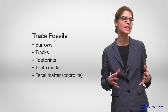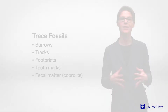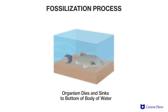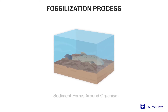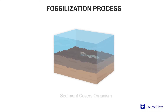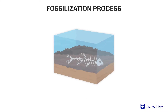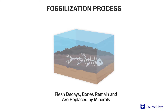The fossilization process is as follows. First, the organism died in or near a body of water. The body was covered quickly by sediment, and layers of sediment accumulated over time. The sediment came under pressure and formed sedimentary rock. Over time, the remains of the organism would have been mineralized to form a fossil.